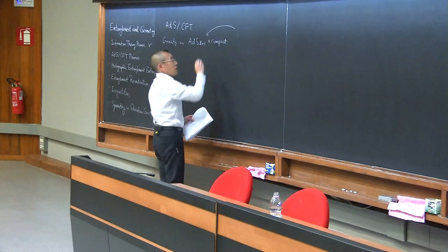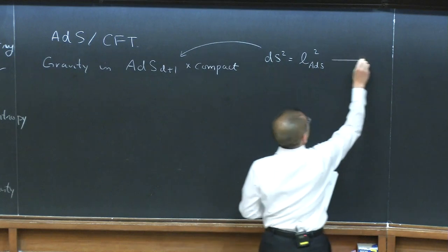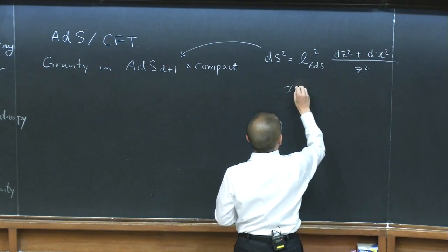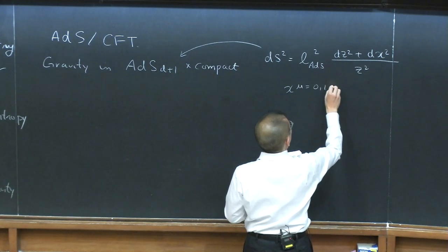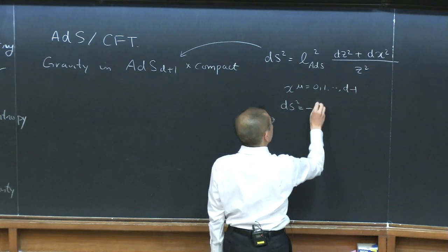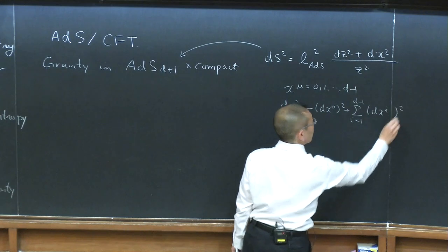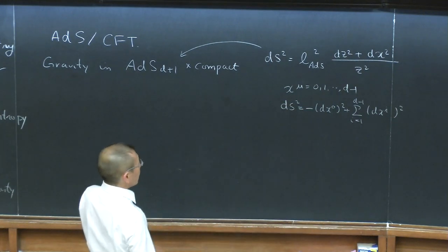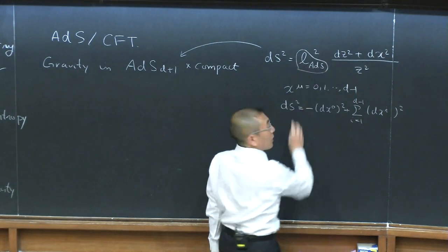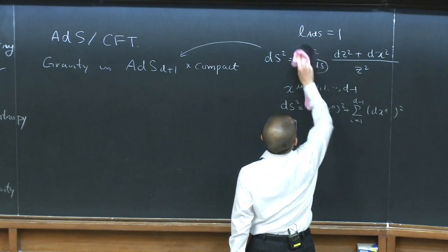This space — you can, for example, introduce a metric. Where X is a Minkowskian coordinate which goes from zero, which is time, to D minus one. This has a standard Lorentzian signature metric: minus dX naught squared plus the sum from i equals one to D minus one of dX_i squared. And Z is the extra coordinate that basically measures the distance to the boundary of this space. I'm going to set the curvature radius of AdS to be equal to one.